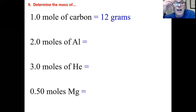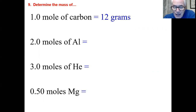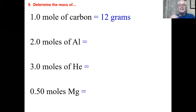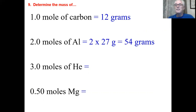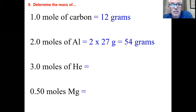Two moles of aluminum — put your finger in box 13. Aluminum has an atomic mass of 26.98, which rounds to 27 AMUs per atom. One mole would be 27 grams, but this is two moles, so it's 2 × 27 = 54 grams. That's about the size of a marble — not much, even though it's an enormous number of atoms.